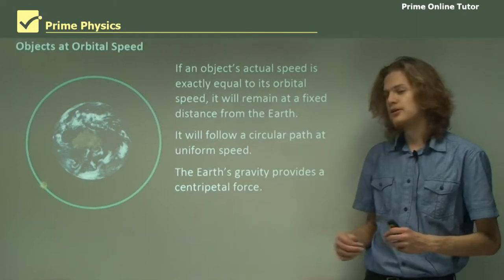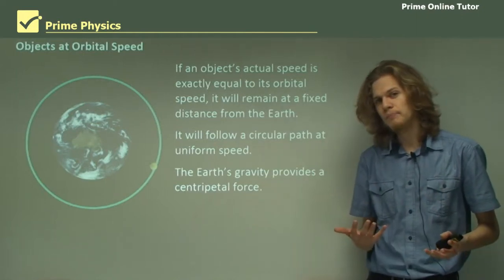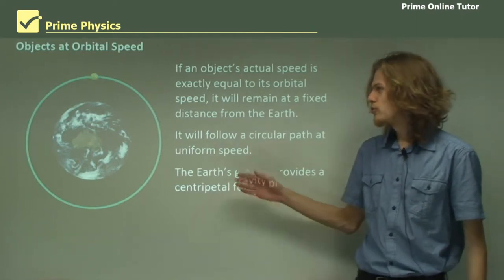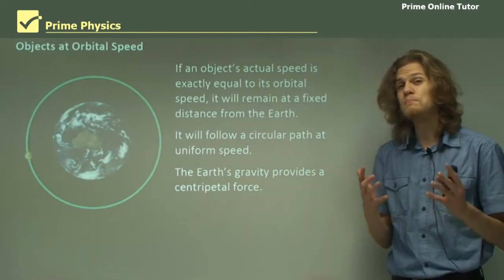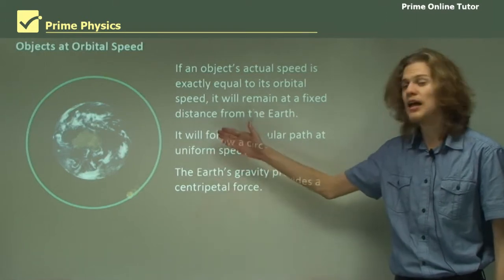And the Earth's gravity provides a centripetal force. So the force on the object will always be pointing towards the centre of the Earth. And it will always have the same magnitude because we're always the same distance.